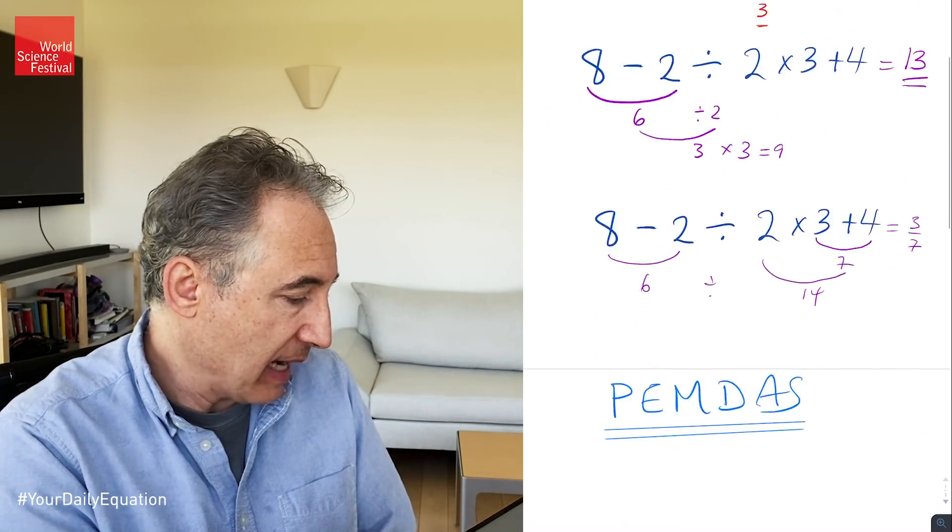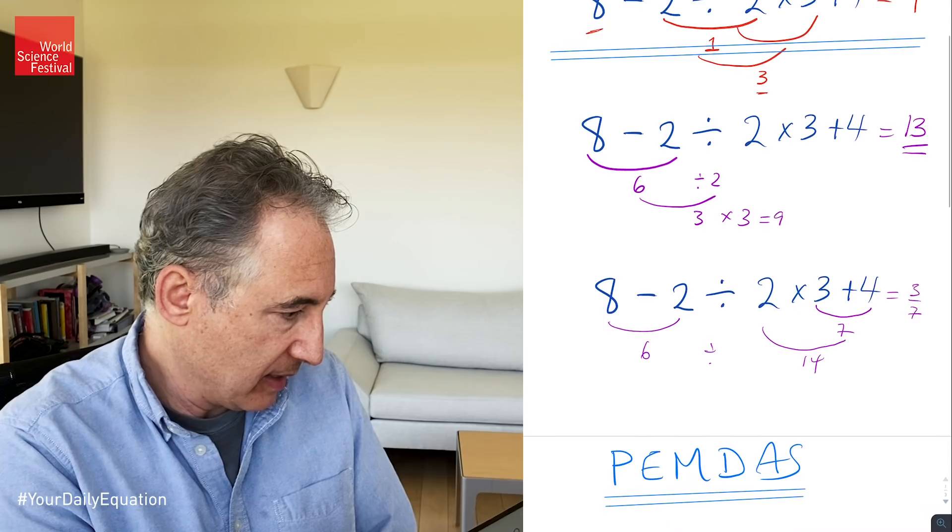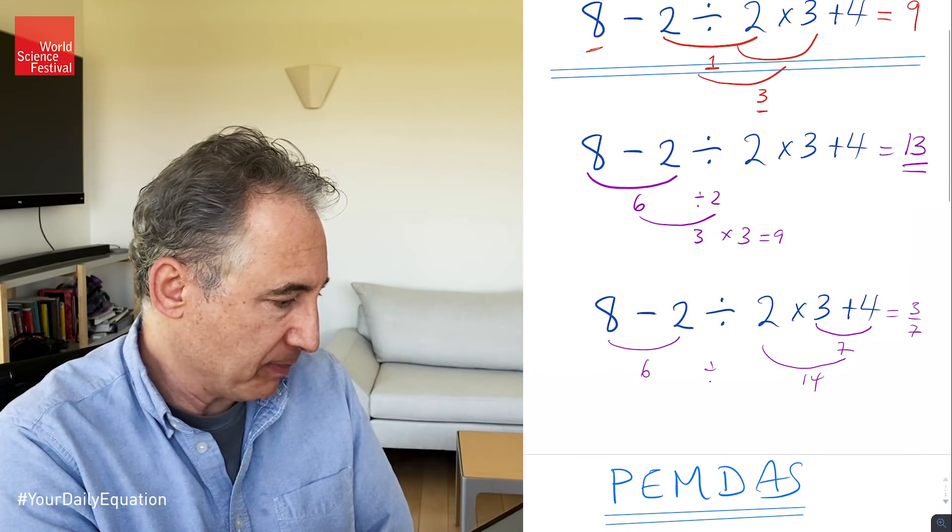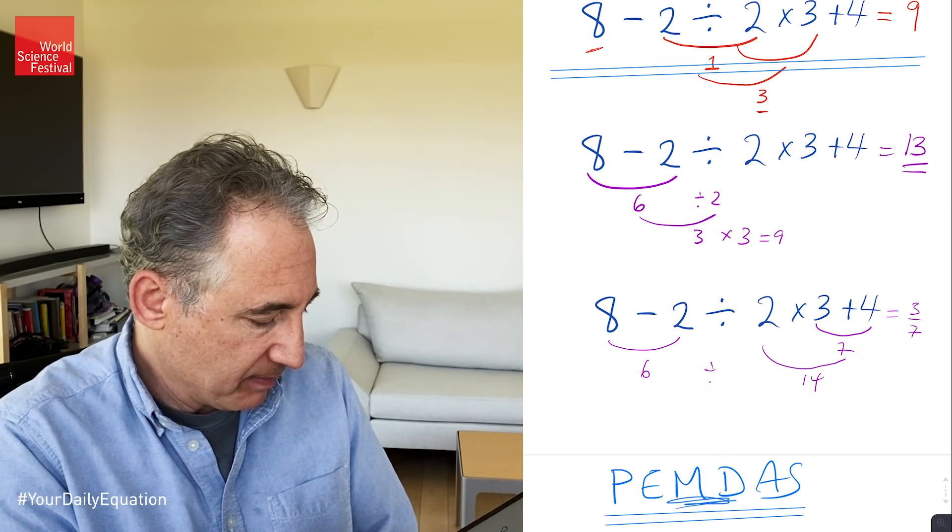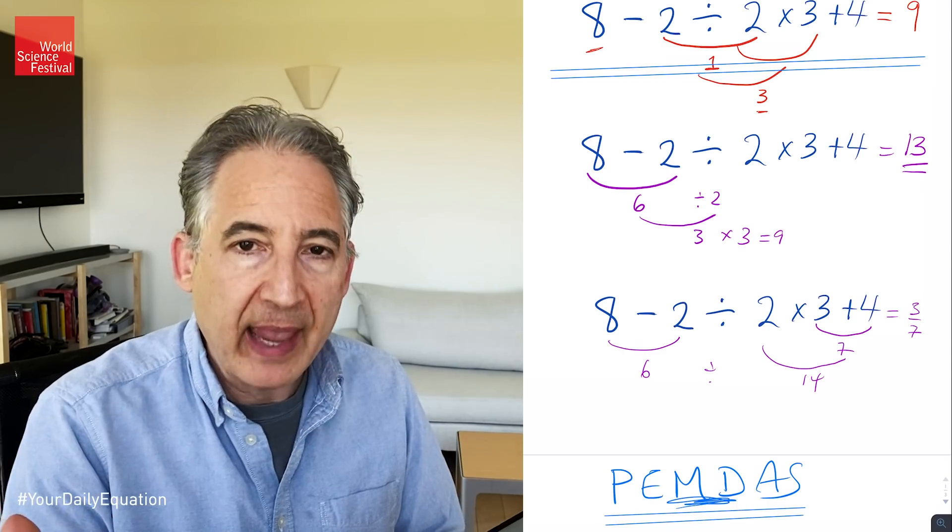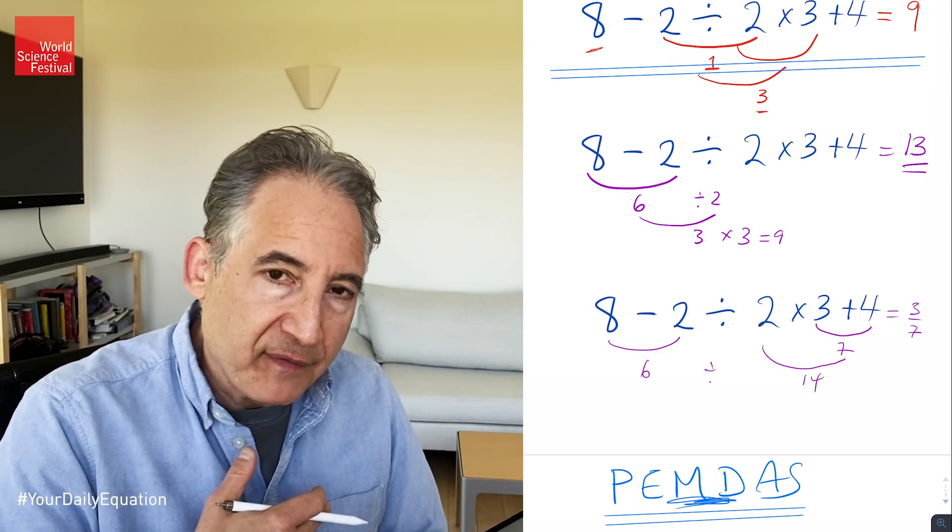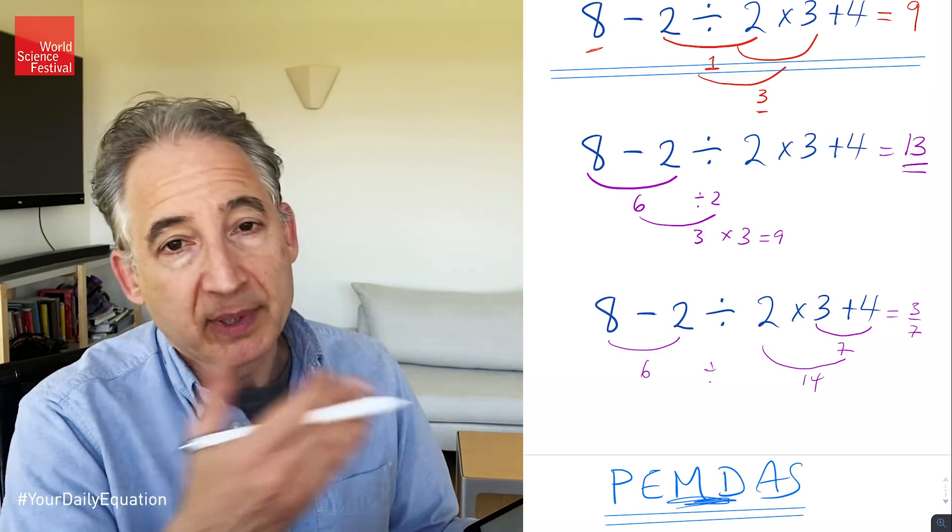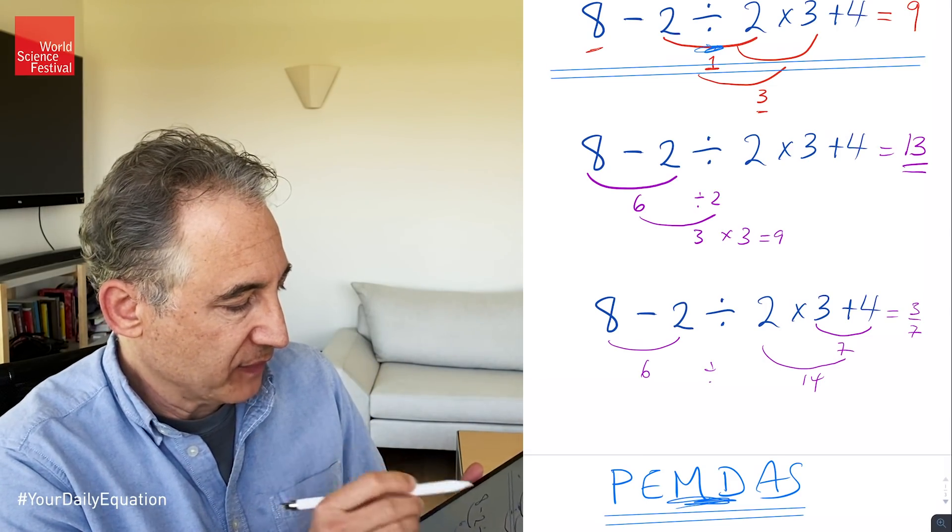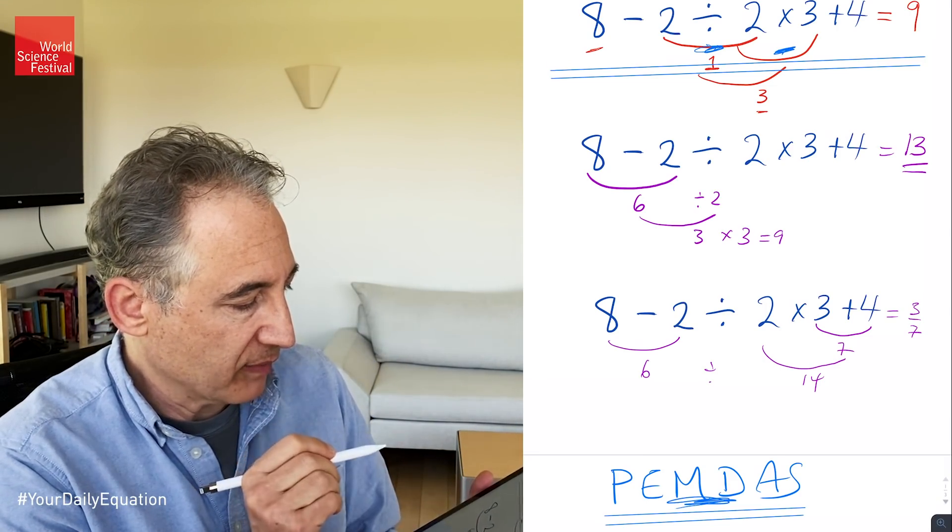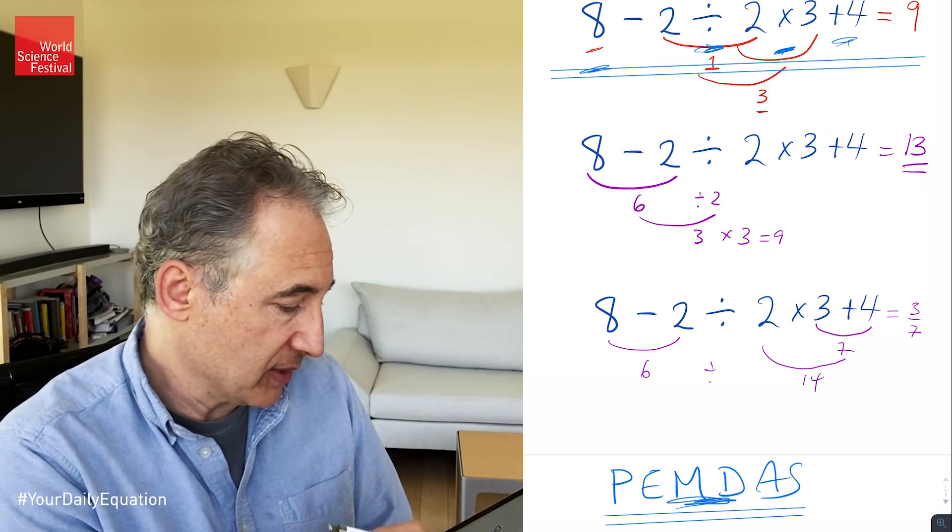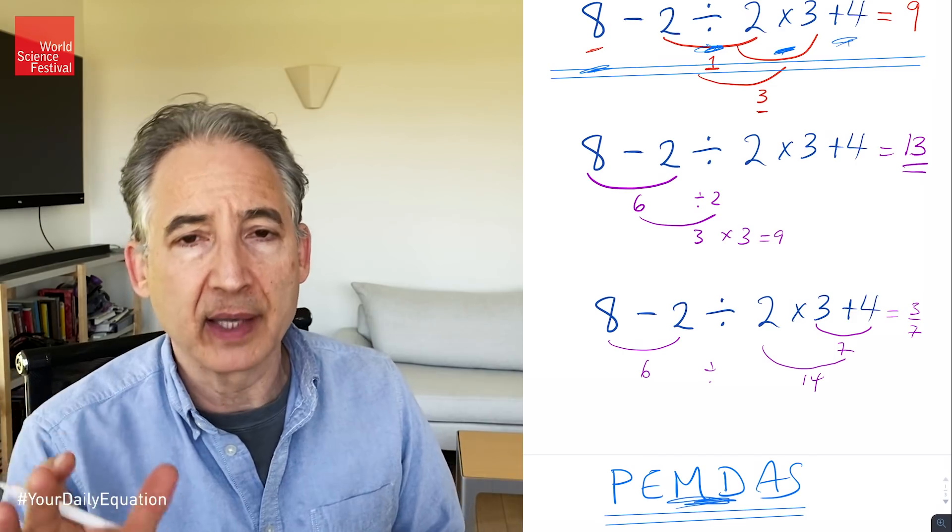And indeed, this top one over here, I believe I did, in effect, follow the PEMDAS prescription. There weren't any parentheses, there weren't any exponents, but I did my multiplication and my division first. And when you have both multiplication and division, you follow the order of those operations from left to right as they're written in the problem. So indeed, I did my division first, then I did my multiplication over here, and then I did my addition and subtraction. Whereas in these other examples, I did something else.